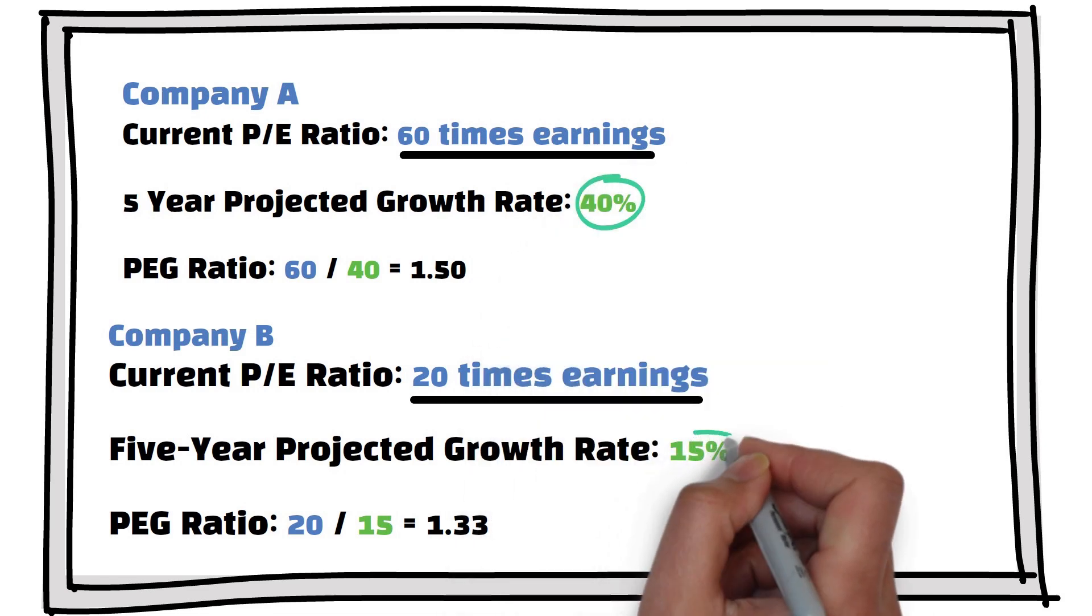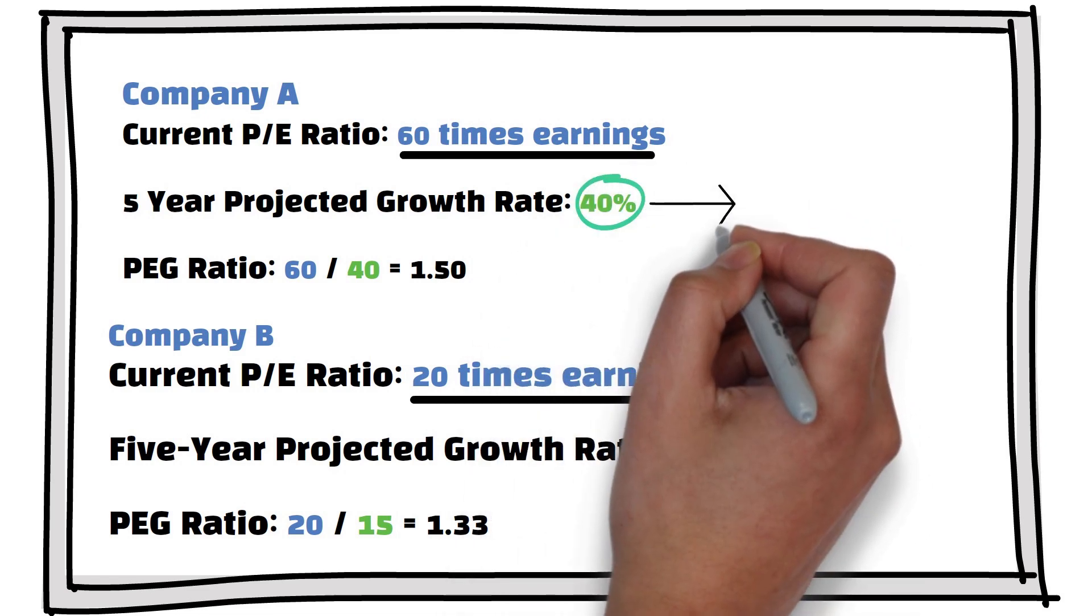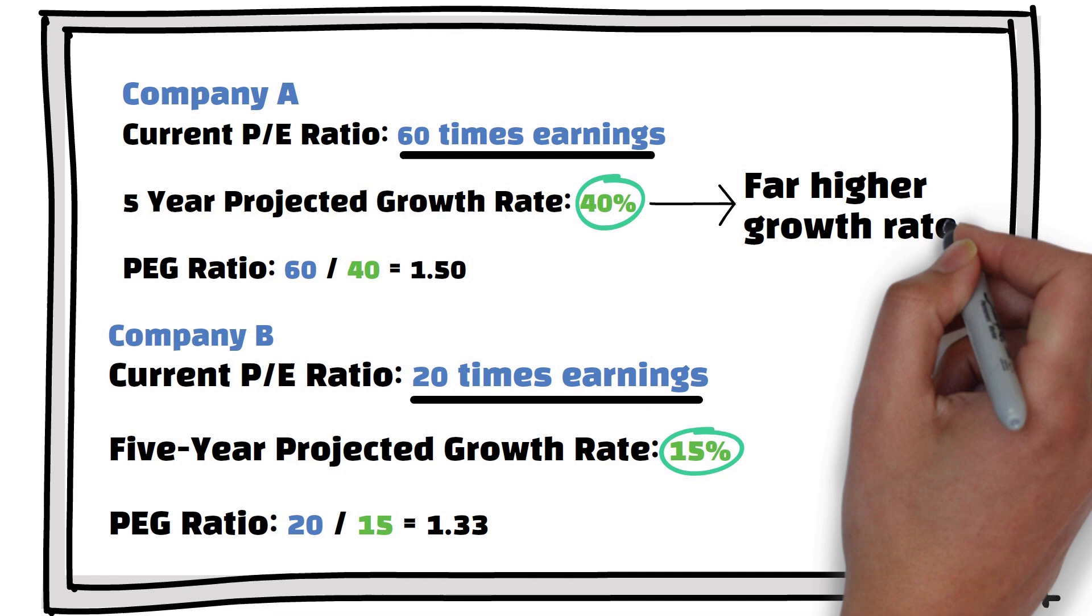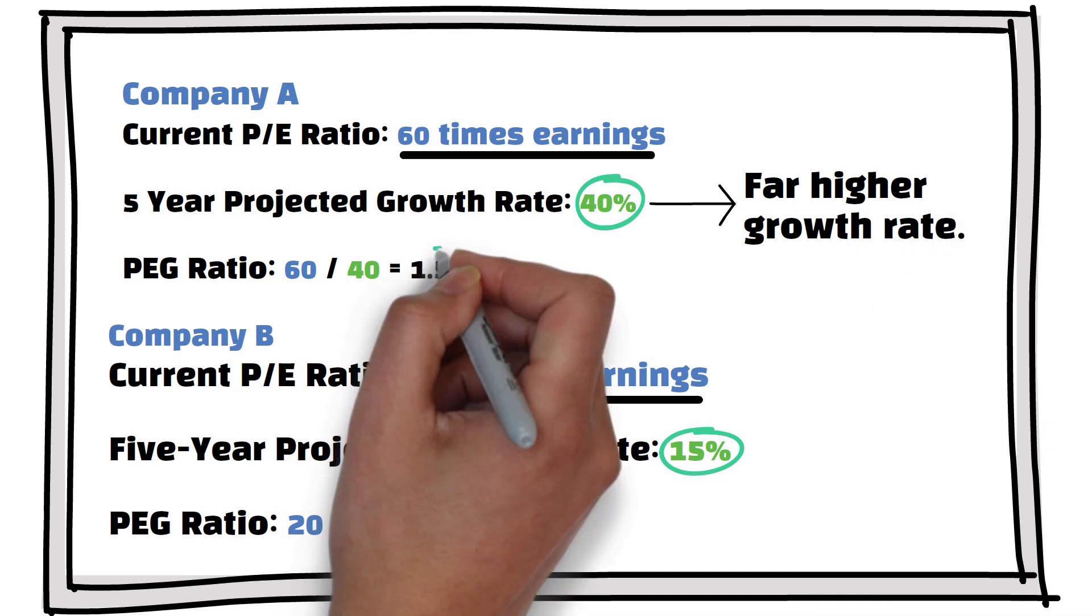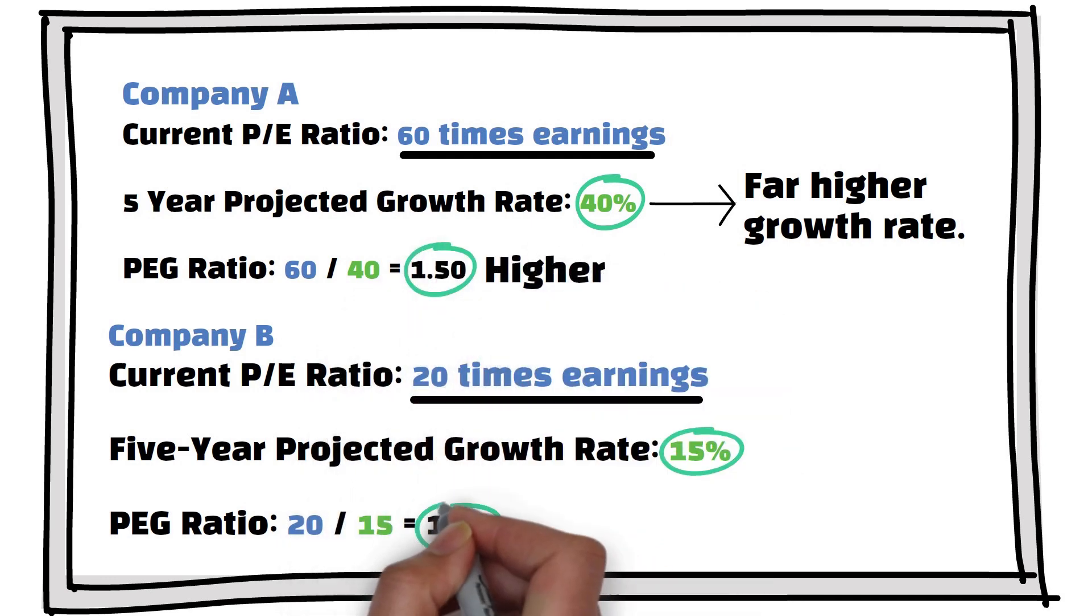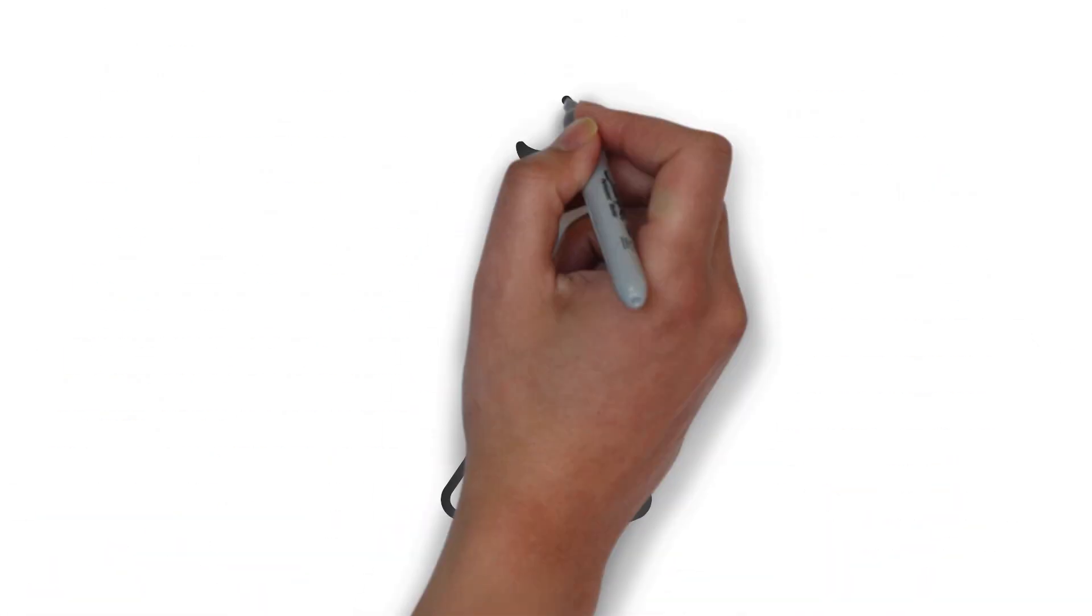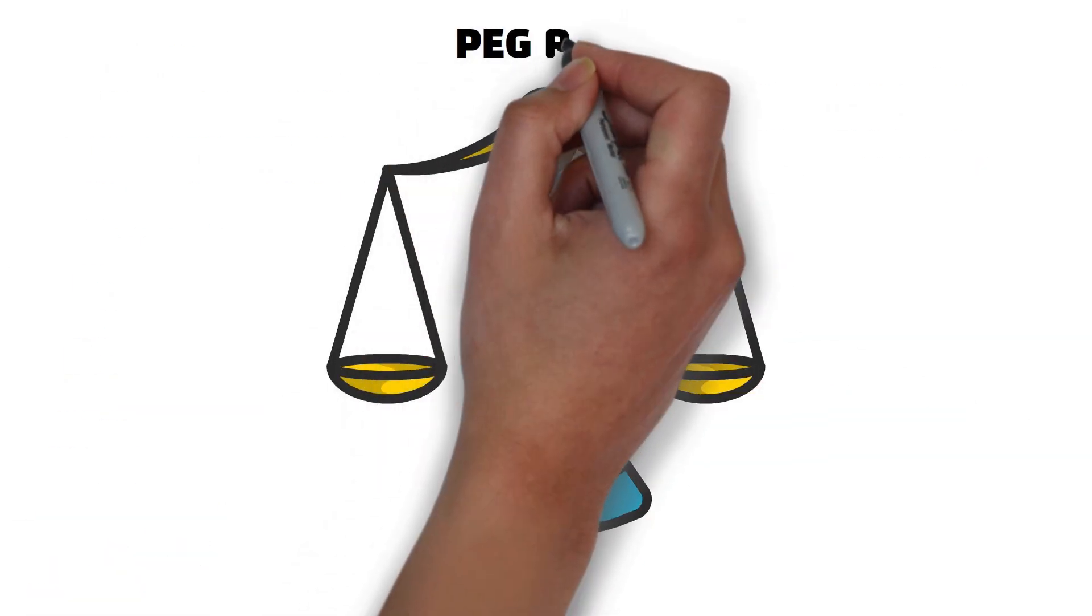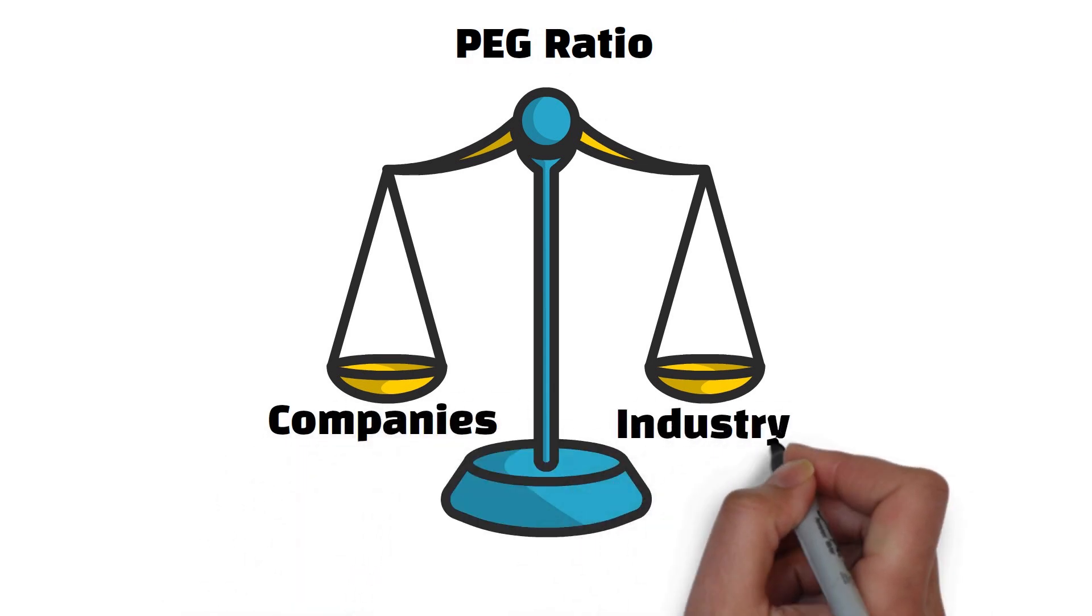But if we bring the growth rate into the picture, we can see a different picture because company A has a far higher growth rate. While its P-E-G ratio of 1.5 is still higher than company B's 1.33, it doesn't look as overvalued as it was when we used just the P-E ratio. By using the P-E-G ratio, you can get a more balanced view, allowing you to make better comparisons across companies and industries.